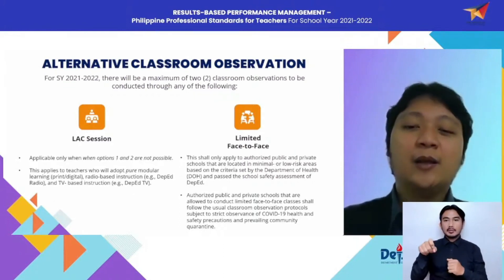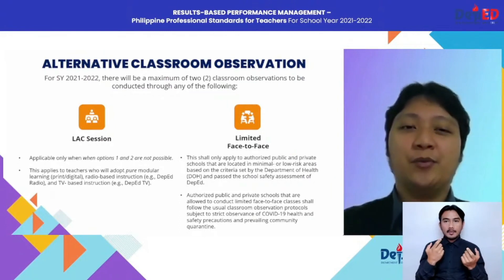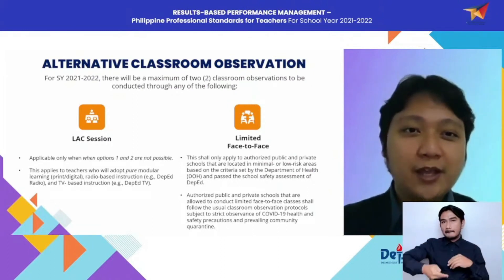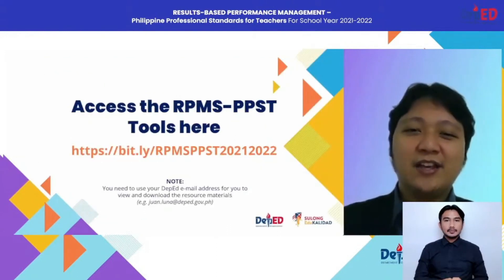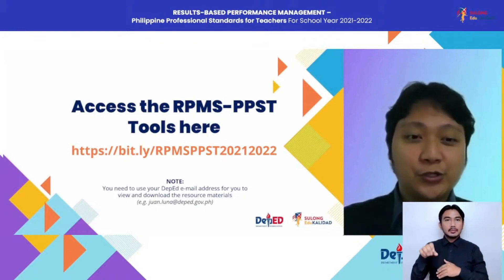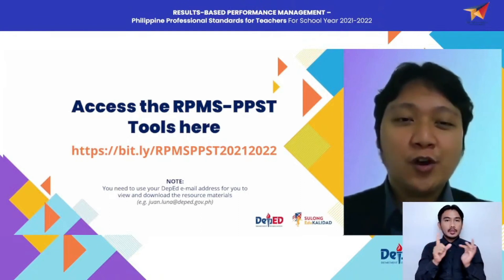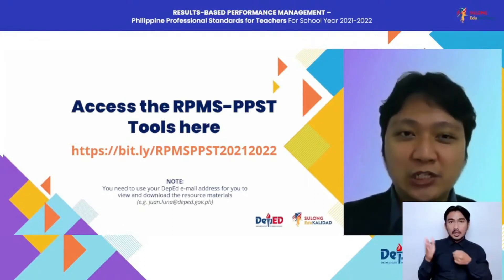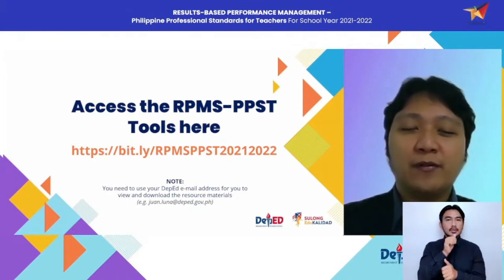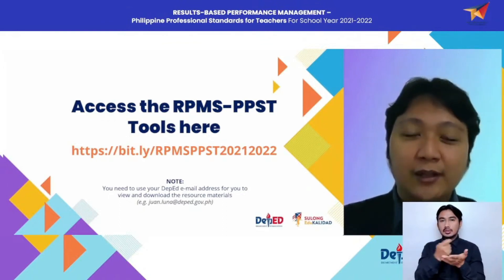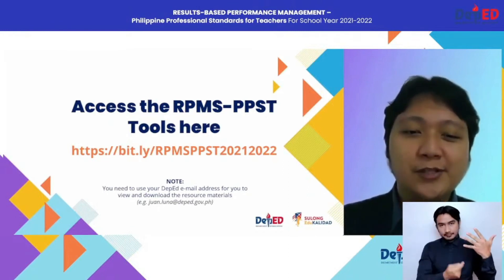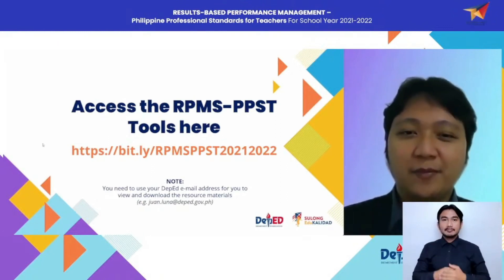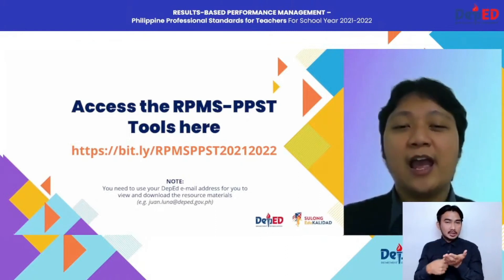For limited face-to-face, this shall only apply to authorized public and private schools in minimal or low-risk areas based on criteria set by the Department of Health and that have passed the school safety assessment of DepEd. These schools shall follow the usual classroom observation protocols subject to strict observance of COVID-19 health and safety precautions and the prevailing community quarantine in your community. If there is a declaration of a higher alert level status, then we must adjust. You may access the RPMS PPST tools in the link shown on your screen — including RPMS tools for regular teachers and teacher broadcasters at proficient and highly proficient levels, classroom observation tools, RPMS rubric, and many more. You need to use your DepEd email address to view and download resource materials, and we will discuss more of these tools in Episode 3.